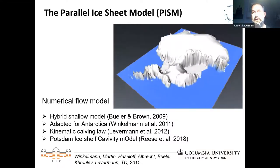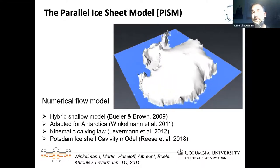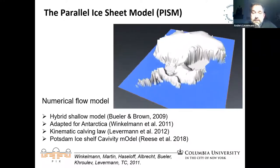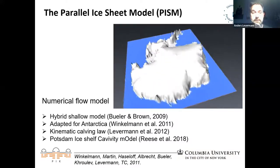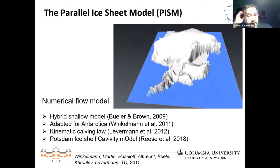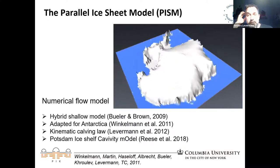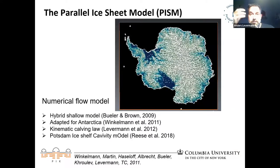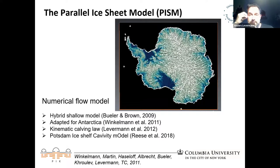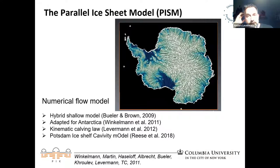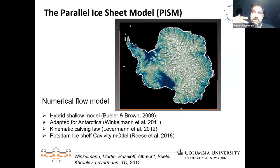Bueler and Brown had the idea to use the shallow shelf approximation for the fast-flowing ice streams in Antarctica — actually in Greenland first. Riccardo Winkelmann, during her PhD in my group, adapted this model from Greenland to Antarctica. We did a number of changes over the years and are now co-developers together with Alaska of this model. Just to illustrate, this old animation shows snowflakes flowing along the flow lines of the model — we do numerical simulations of these kinds.